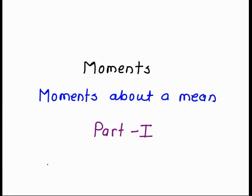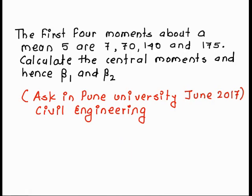In this video we study how to calculate the moments about the mean with the help of an example. The first four moments about mean 5 are 7, 70, 140 and 175. We need to calculate the central moments and hence beta 1 and beta 2. This question was asked in Pune University June 2017 for civil engineering second year.